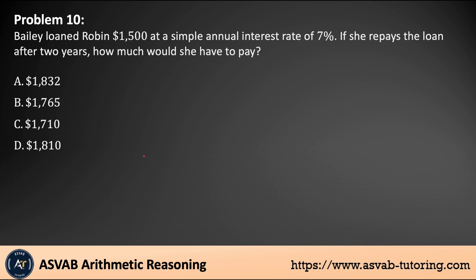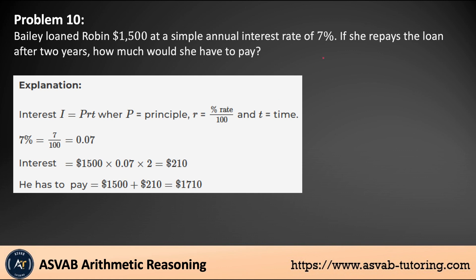Next problem: Bailey loaned Robin $1,500 at a simple annual interest rate of 7%. If she pays the loan after 2 years, how much would she have to pay? Use the formula I = PRT — interest equals principal times rate times time. Convert 7% to 0.07. Multiply 1,500 times 0.07 times 2, giving you $210 in interest. Add $210 to $1,500, giving you a total of $1,710. That is the final answer.